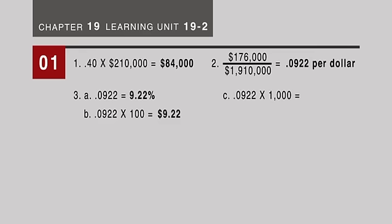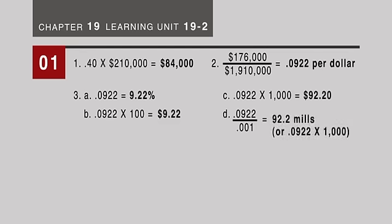In letter C, when we're talking per thousand, you move it three places to the right, and the tax rate would be 92.20 per thousand. In letter D, to do mills, you take .0922 divided by .001, and in this case that would come out to be 92.20 mills.